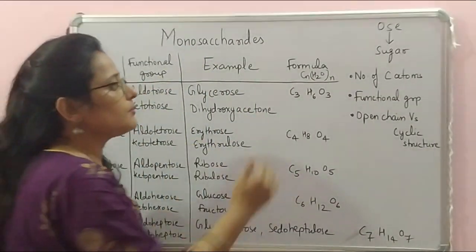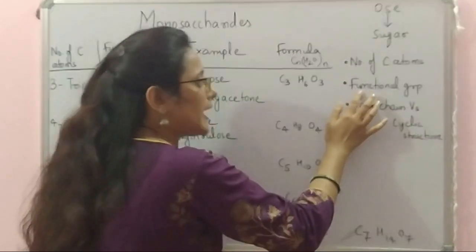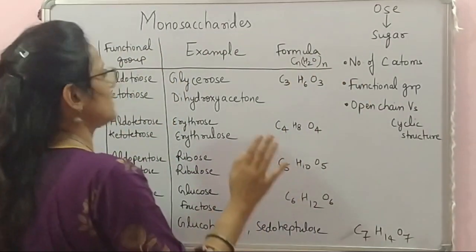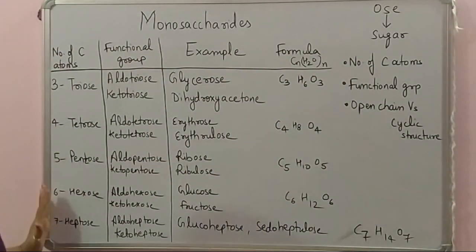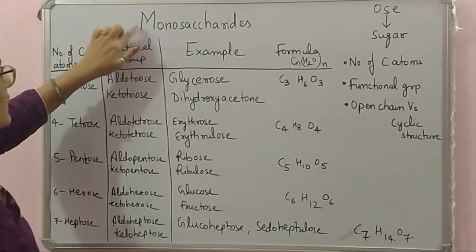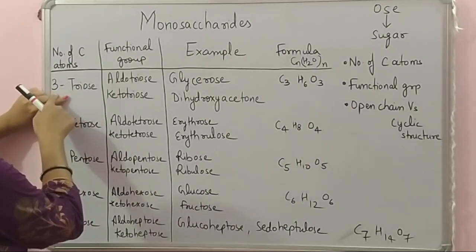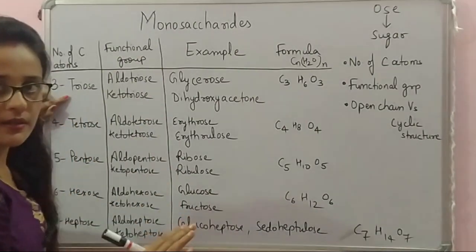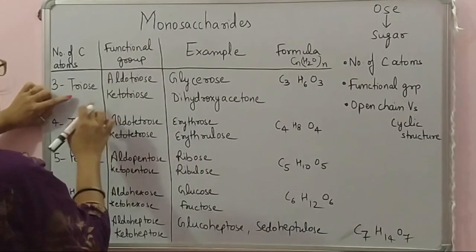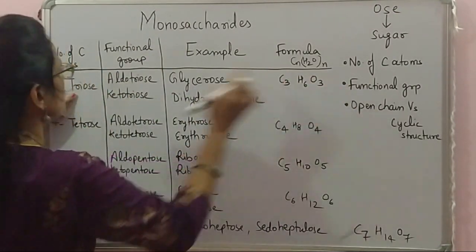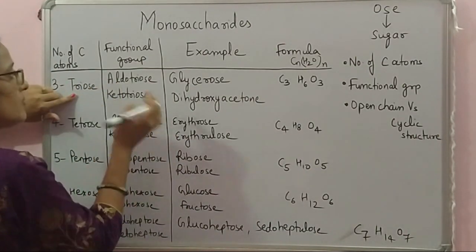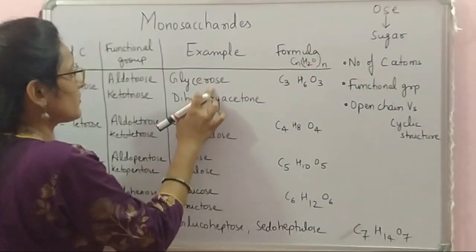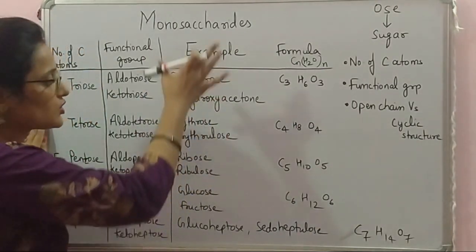Monosaccharides can be divided into subtypes on the basis of three things: number of carbon atoms, type of functional group (aldehyde or ketone), and whether that monosaccharide is found in open chain form or cyclic structure. On the basis of number of carbon atoms: if three carbon atoms are present, that monosaccharide is called a triose — tri means three and -ose means sugar. On the basis of functional group, a triose can be of two types: an aldotriose (with aldehyde functional group) or a ketotriose (with ketone functional group). An example of aldotriose is glycerose; an example of ketotriose is dihydroxyacetone.